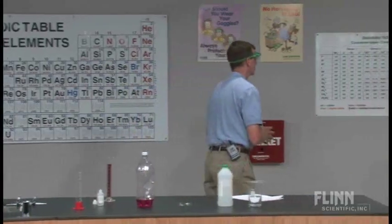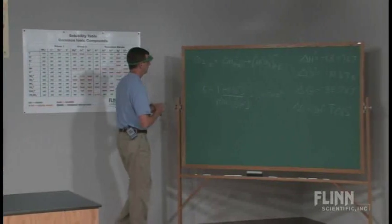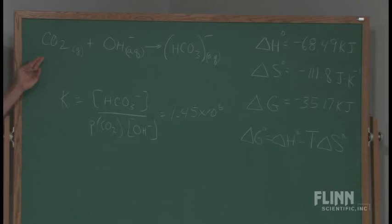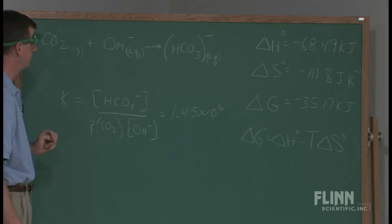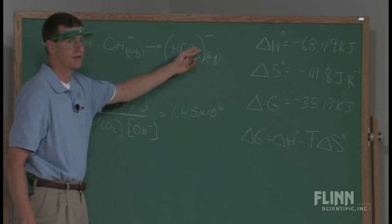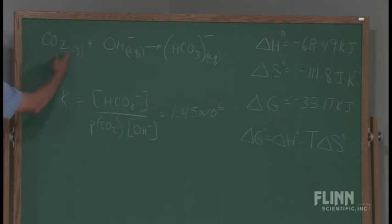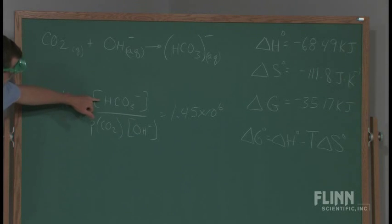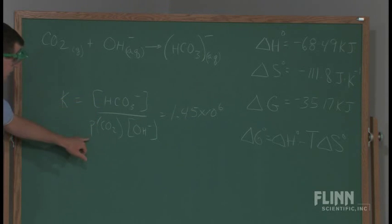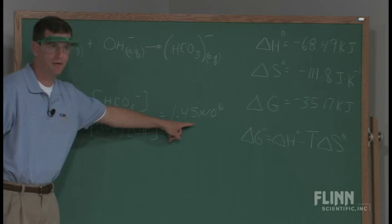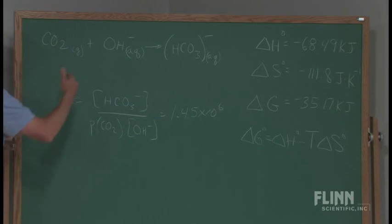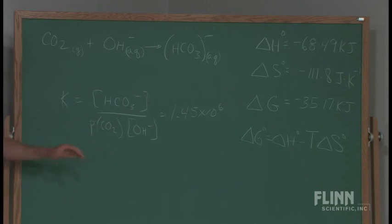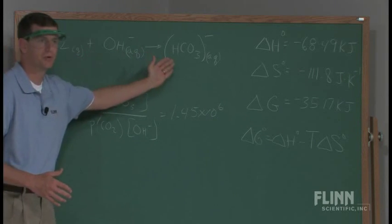If you follow me to the board, we'll look at some of the numbers behind this. The net ionic equation is as such: I've got my carbon dioxide gas reacting with the hydroxide ions in solution, making hydrogen carbonate, a negative one — that's aqueous. That lowers my partial pressure of carbon dioxide. The equilibrium for this shows products over reactants, and it's such a large K value that it lies so very far to the right towards the products that even at very low levels of carbon dioxide, the reaction is still going to proceed to the right.